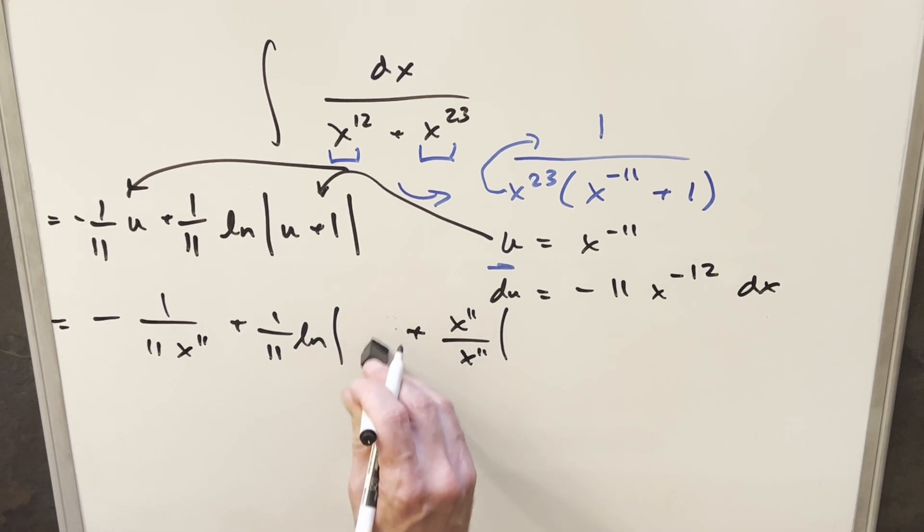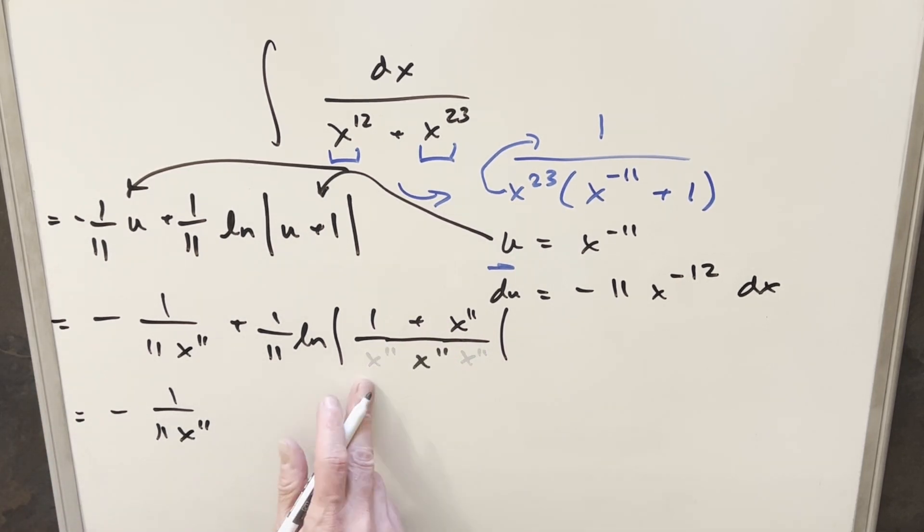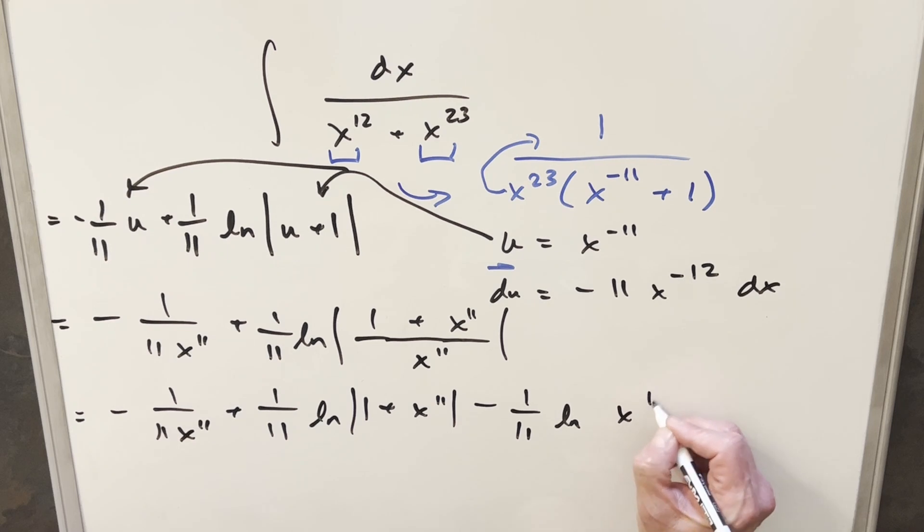And then we'll try to simplify it here. I can write this as 1 over x to the 11. But then we already have a common denominator here. So we put this together all under one common denominator. But then by log properties, we can split this up. And we have 1 over 11 natural log 1 plus x to the 11th. Then splitting this up here in the denominator, this is going to be a minus sign. This will become minus 1 over 11 natural log x to the 11.